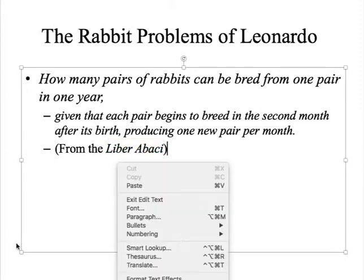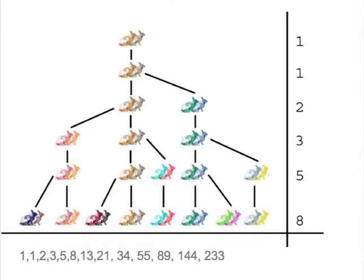So to solve this problem, actually we can use a diagram. So on the right side, we have number of pairs of rabbits each month. The first month we have just one pair, just the original pair.